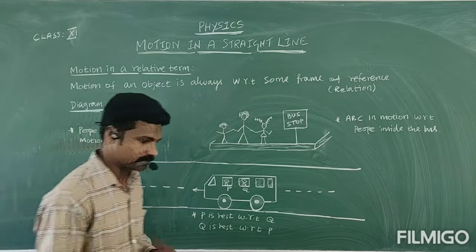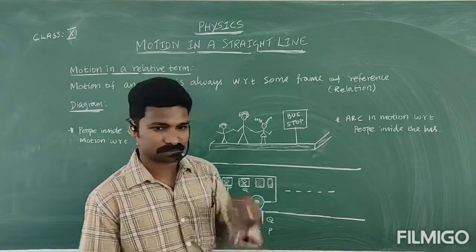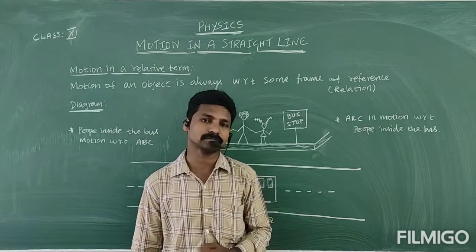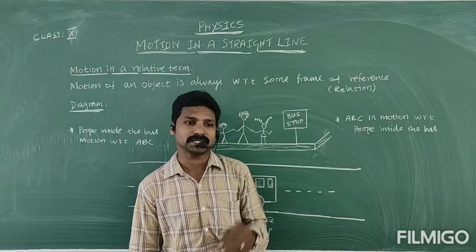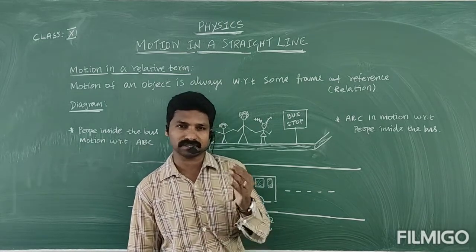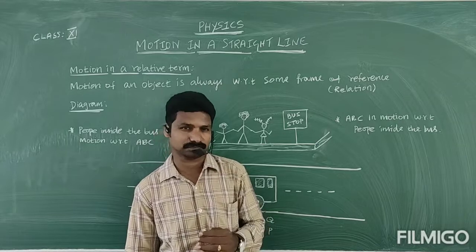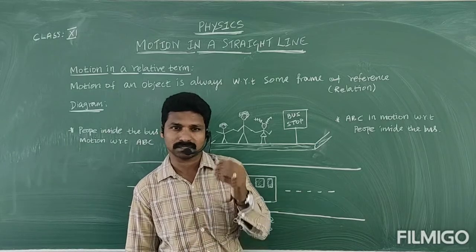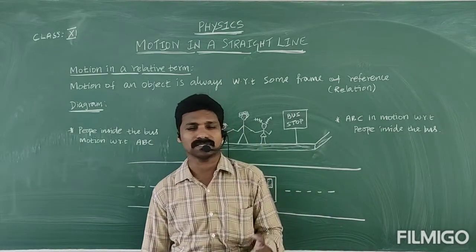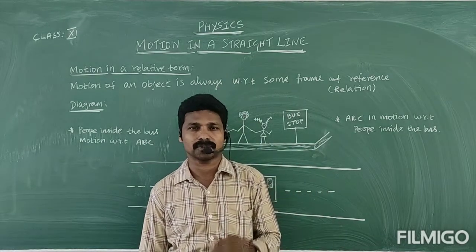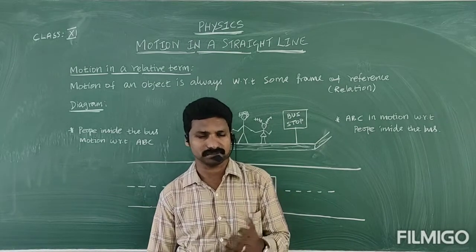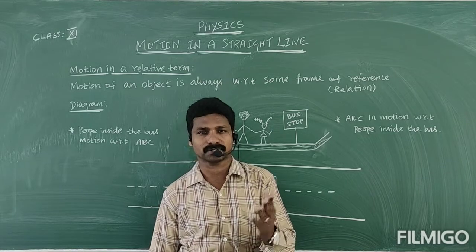You know very well, previously you were studying about motion in your 9th standard. In the 9th standard, you defined the types of motion and the equations of motion — that is, v = u + at, s = ut + ½at², and v² = u² + 2as.